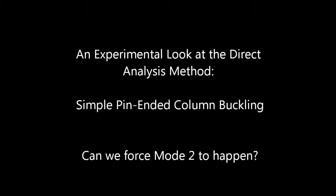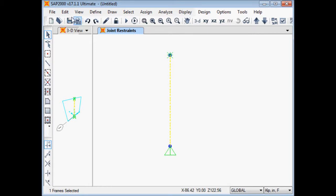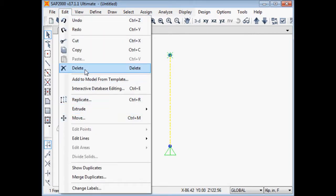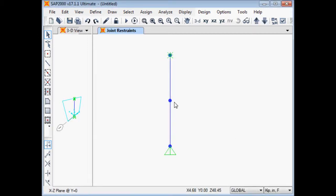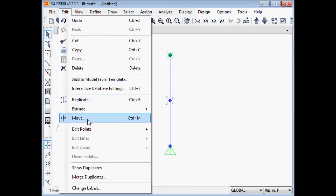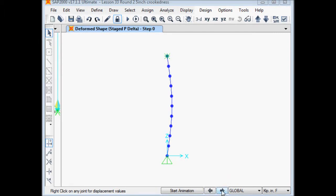The direct analysis method is a relatively new and fascinating way of looking at buckling. The idea of the direct analysis method is that buckling is caused by real imperfections in members, and those real imperfections go through progressive P-delta or secondary effects as load is applied.